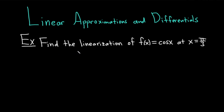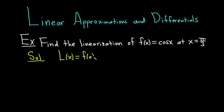The question asks us to find the linearization of f of x equals cosine x at x equals pi over 3. The formula for the linearization is L of x equals f of a plus f prime of a times x minus a. This is the linearization of f at a. In our particular problem, a is equal to pi over 3.